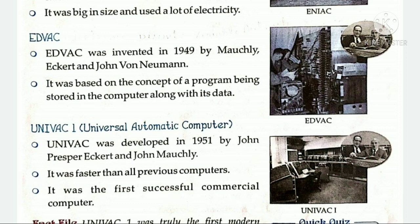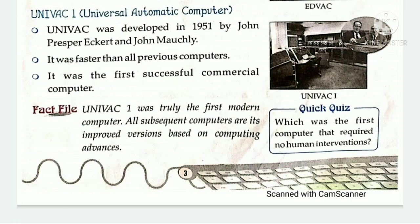EDWAC को John Mosley, John Presper Eckert, and John von Neumann ने invent किया था. Next is UNIVAC 1 — Universal Automatic Computer. UNIVAC was developed in 1951 by John Presper Eckert and John Mosley. It was faster than all previous computers and was the first successful commercial computer. UNIVAC का full form होता है Universal Automatic Computer. इसे John Presper Eckert और John Mosley ने 1951 में develop किया था.